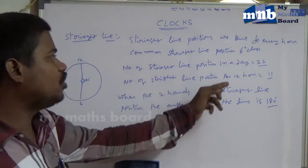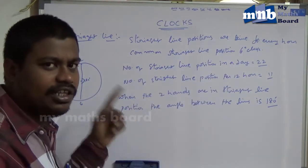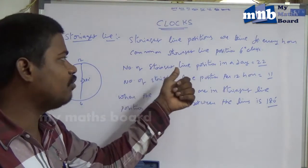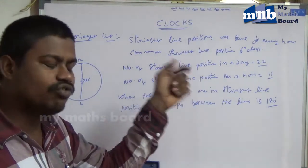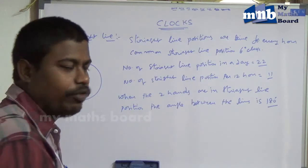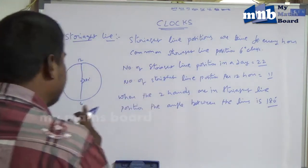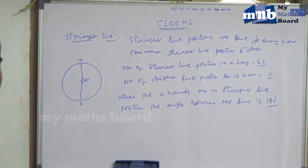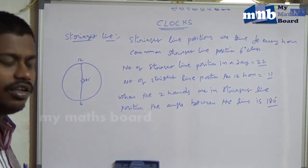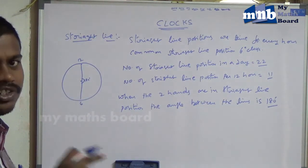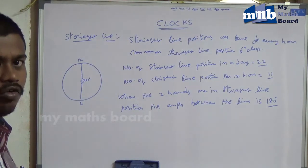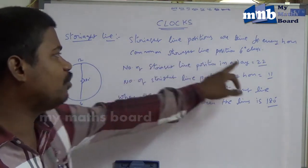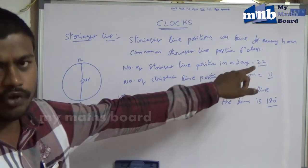The number of straight line positions in a day: according to our theory, the straight line position occurs once per hour, so for 24 hours that would be 24 — but that is not correct. Because per day we face two 6 o'clock positions — the morning 6 o'clock and the evening 6 o'clock — and both are common straight line positions, so they are not countable. Therefore, 24 minus 2 equals 22: the number of straight line positions in a day is 22.